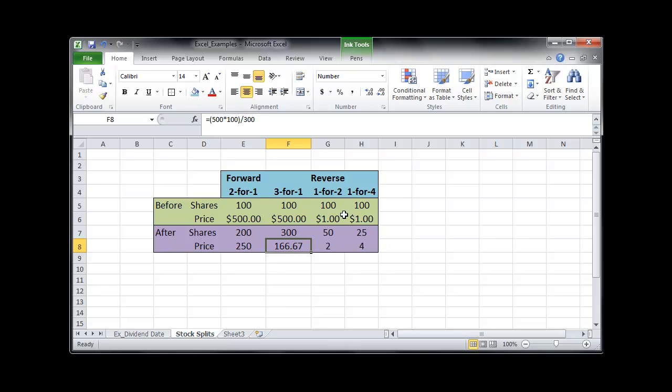Let's do another example of a reversal. We have a one-for-four reverse stock split. We take the number of shares. It would be 100 times one, divided by four. We've reduced our shares to 25, from 100 to 25. Now we find a new stock price. The overall value was 100 shares times the dollar, divided by the new number of shares, which was 25. We've increased the price to $4 from a dollar.